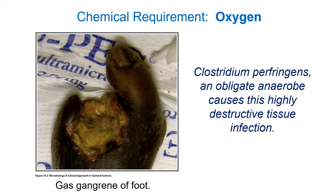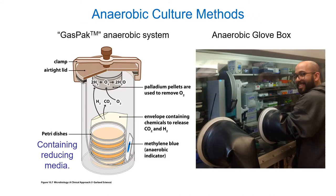Clostridium is a genus of bacteria including obligate anaerobic members that can cause a lot of tissue destruction — they're associated with gangrene, a condition with reduced blood flow resulting in decreased oxygen at tissues. This bacterium generates a lot of hydrogen and other gases as byproducts of metabolism. What you're seeing here — and I apologize for the gory image — used to be a foot.